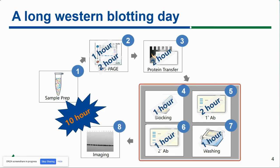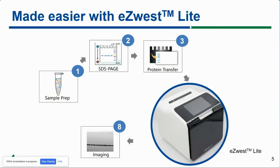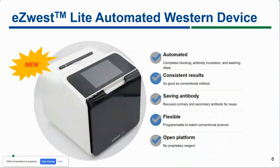The one thing we want to attack first is the most complicated part — all the incubations — because they involve many different steps that have to be repeated multiple times. Washing usually has to be done at least three times each time, between switching antibodies or between blocking and primary antibody. So that's why we worked on this little device called EasyWest Lite. As the name entails, we are trying to make the whole incubation process easier. It's a new release — a new device we just released to the market. It's relatively small and can fit on any benchtop, and it's relatively easy to use.